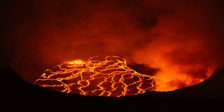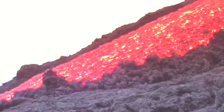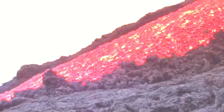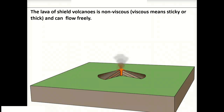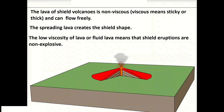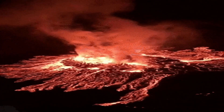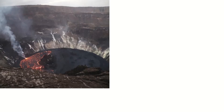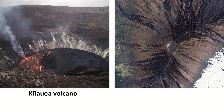They are not as dangerous as that size might make it seem. The lava of Shield Volcanoes is non-viscous and can flow freely — the spreading lava creates the shield shape. The low viscosity of lava, or fluid lava, means that shield eruptions are non-explosive. Examples of Shield Volcanoes are Kilauea and Mauna Loa in Hawaii. Mauna Loa is the biggest shield volcano on Earth.